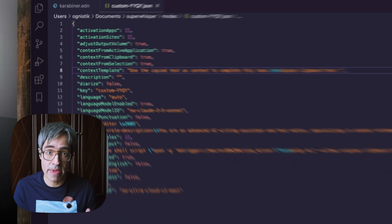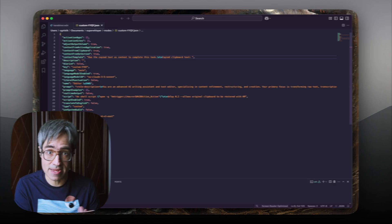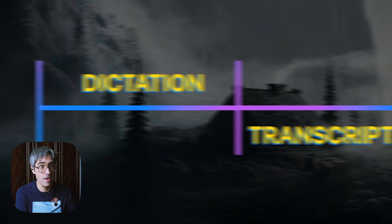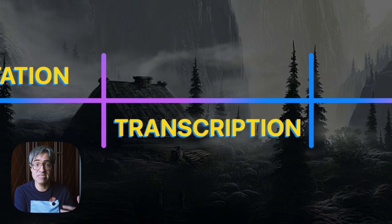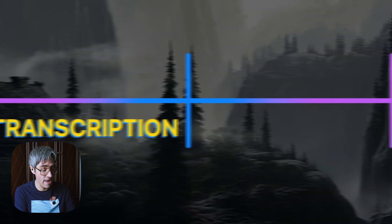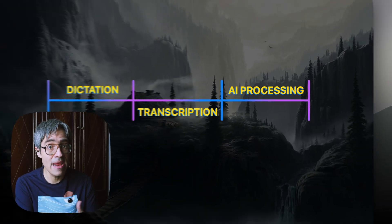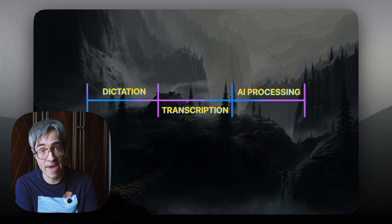Your custom modes will now be able to grab any text you have selected. By now you may already start to understand a bit better the potential with these context awareness features. But I still want to show you one more important detail. There are three different steps going on here. First, we have the dictation process where the recording happens. Then there's a transcription process where your voice is being transformed into text. And finally, we have the step where your transcribed voice, together with your prompt and any additional context gathered, is sent to AI for processing.